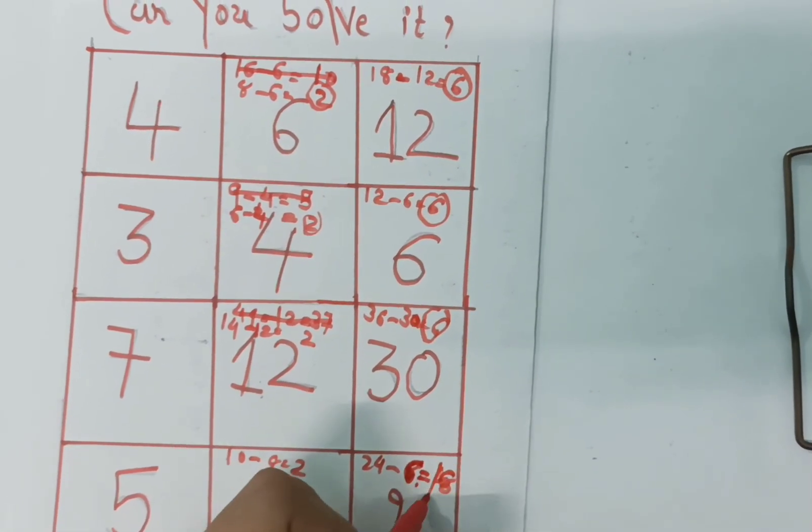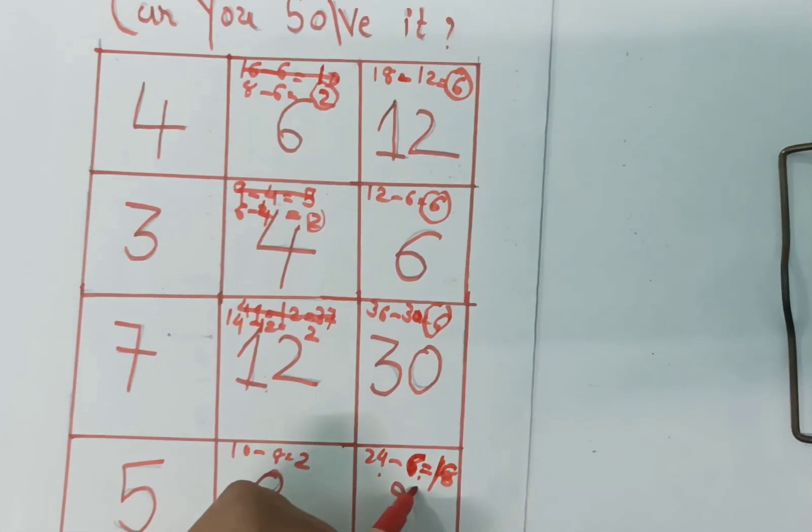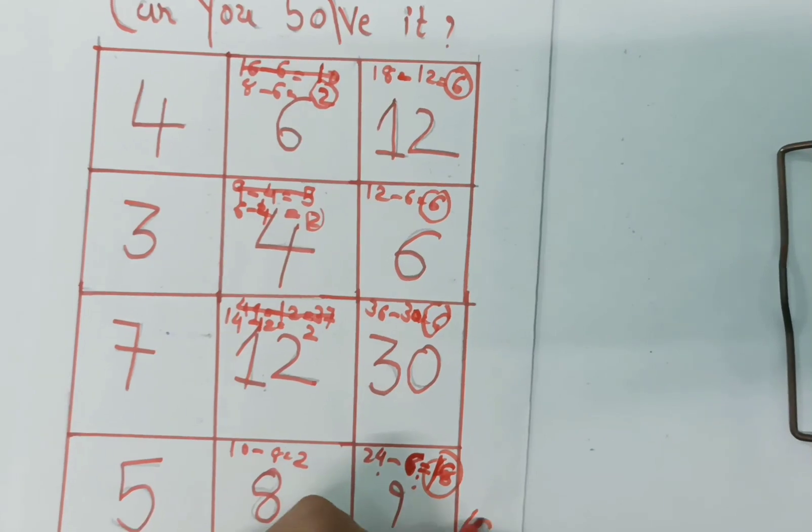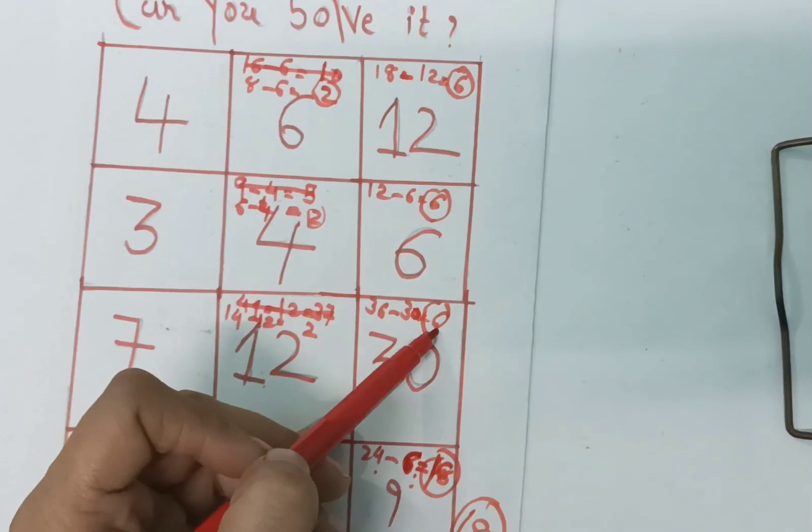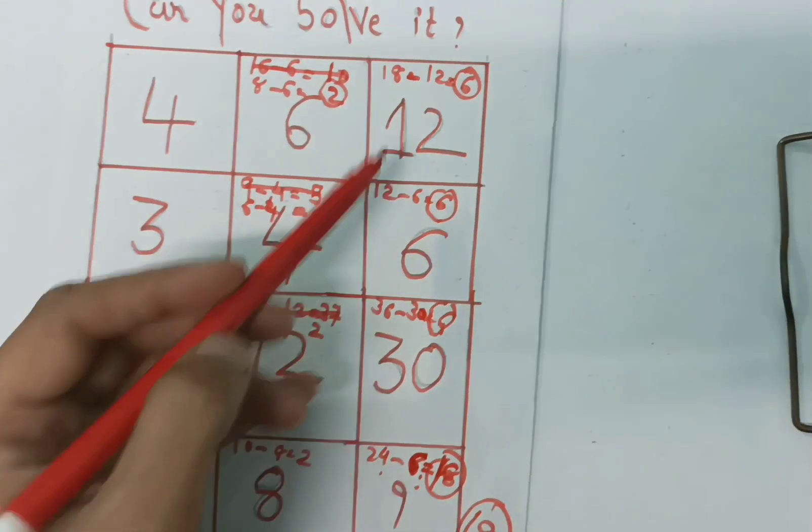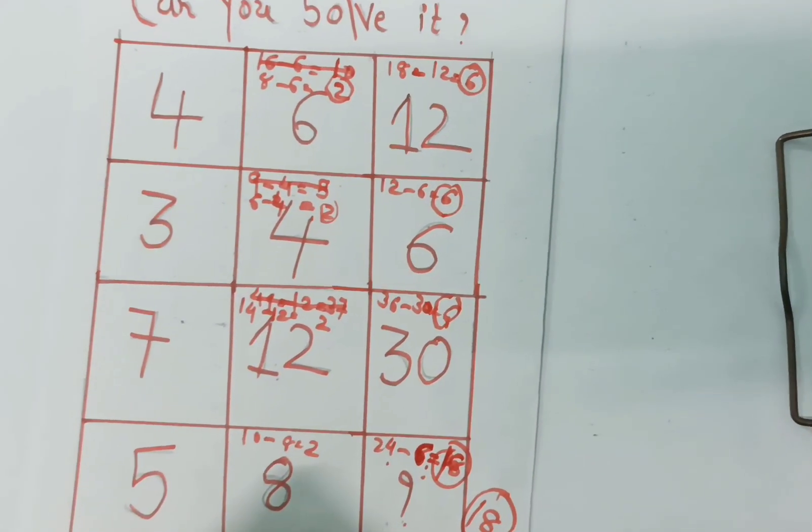So we get 18. The answer is 18. Here 6, here 6, here 6. We have subtracted 6 from all the things, so here we have to subtract 6.